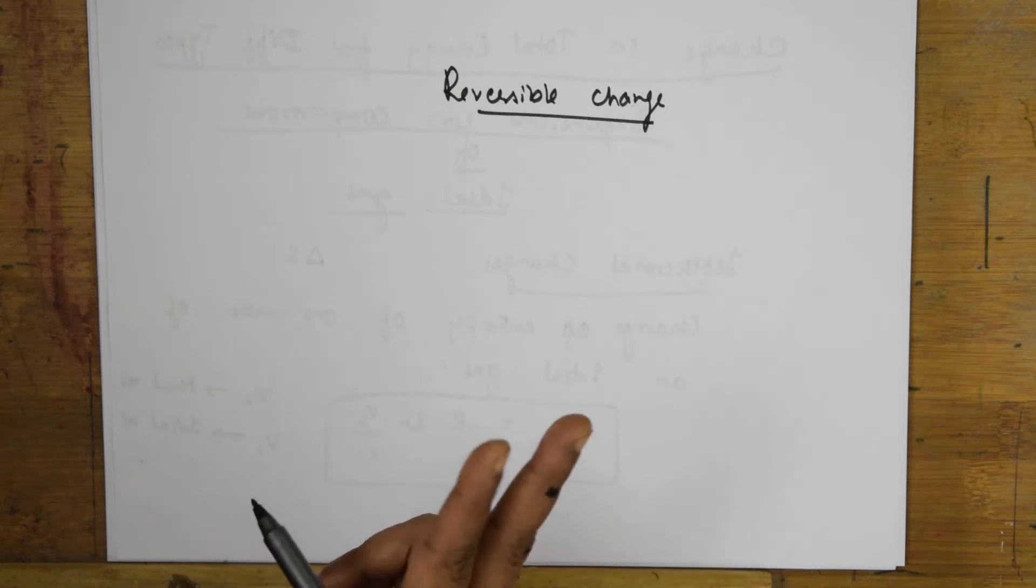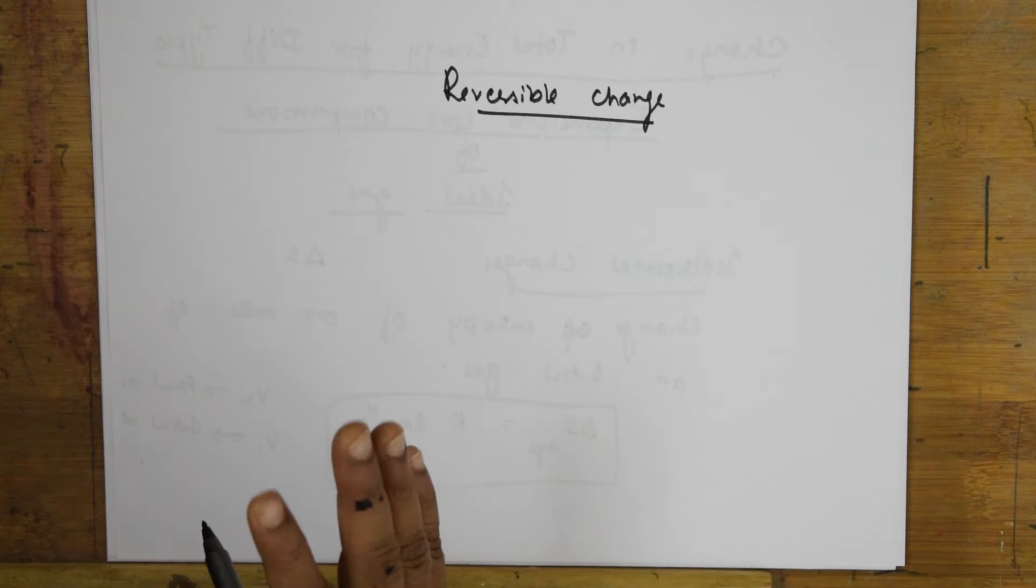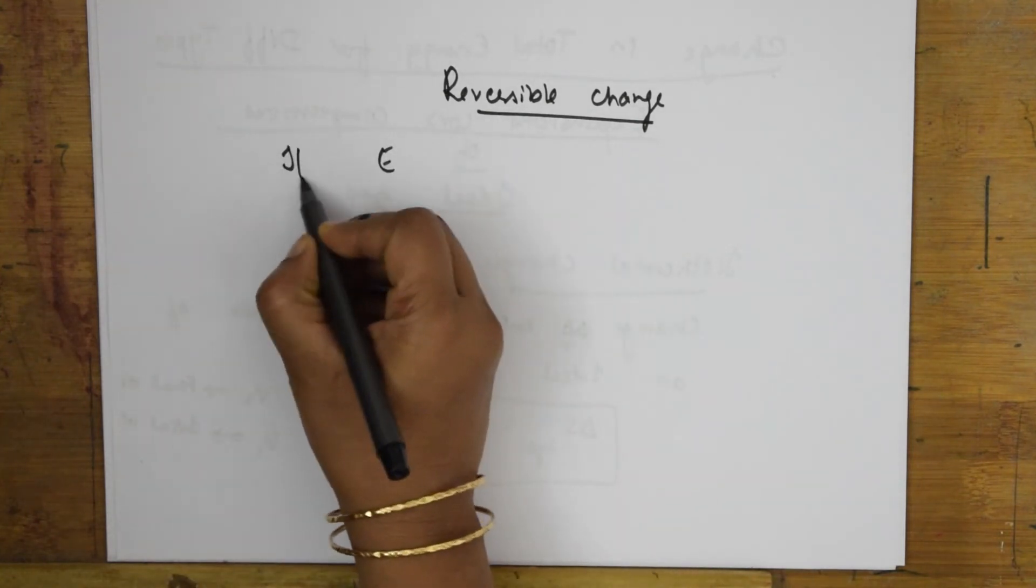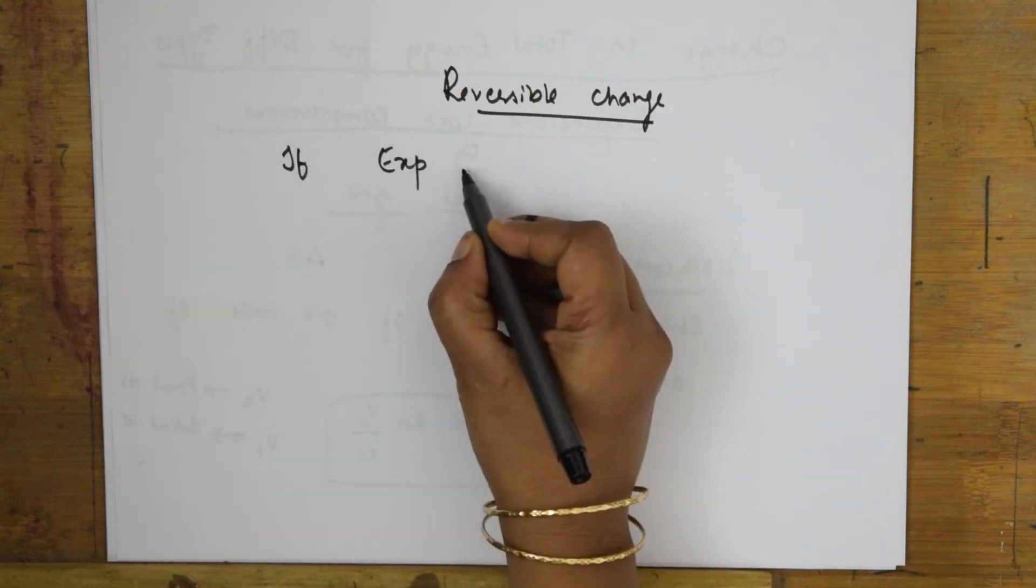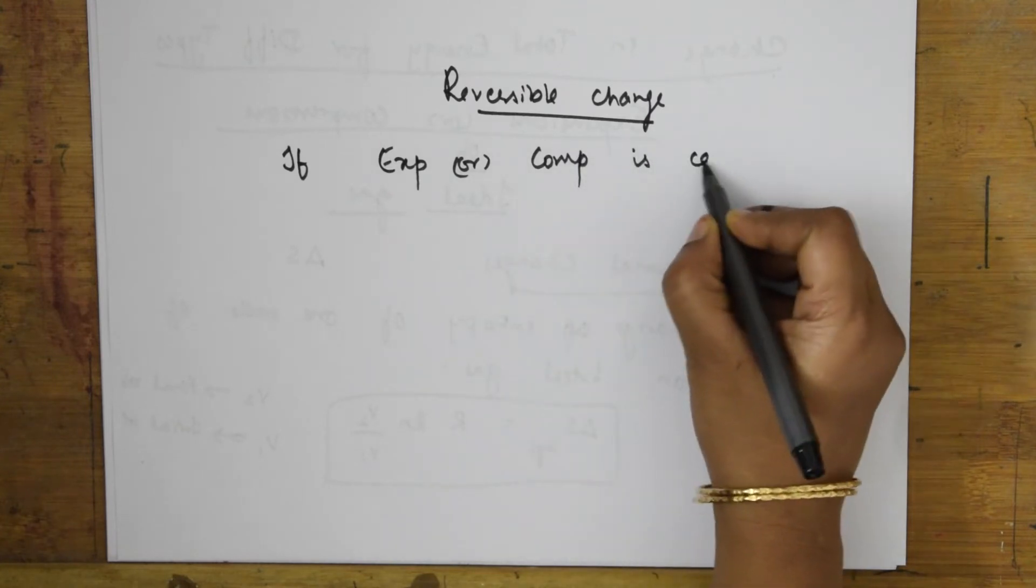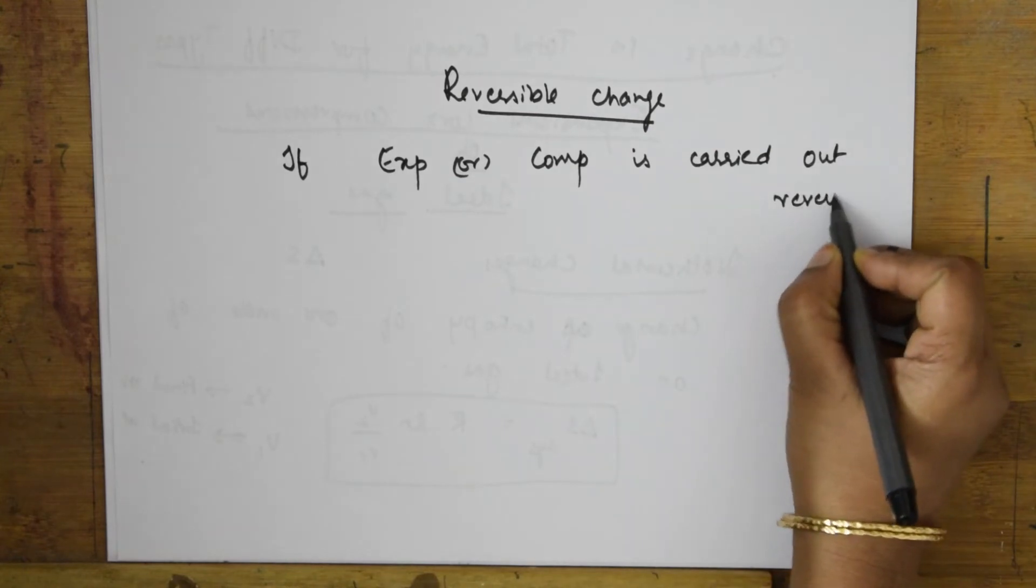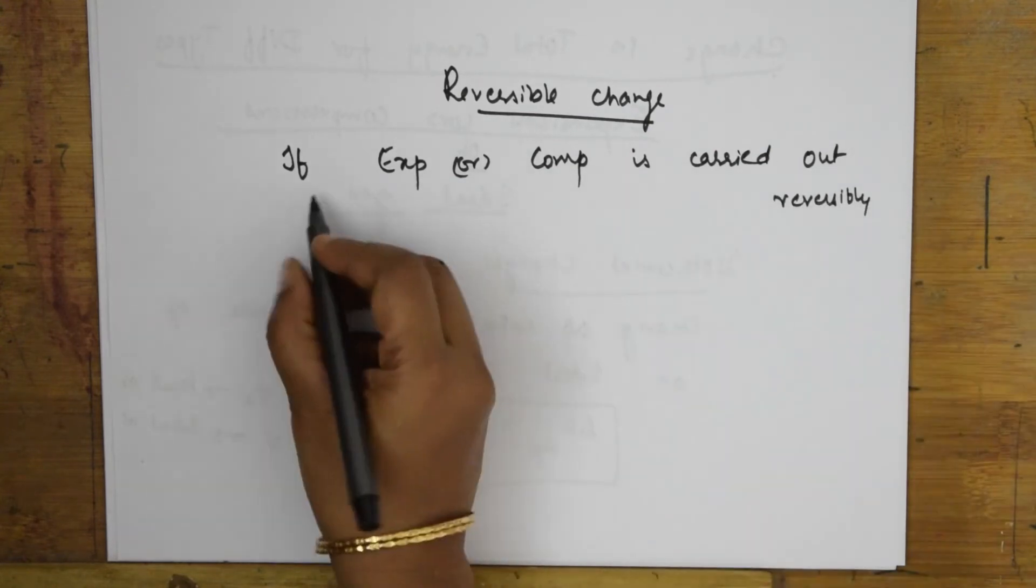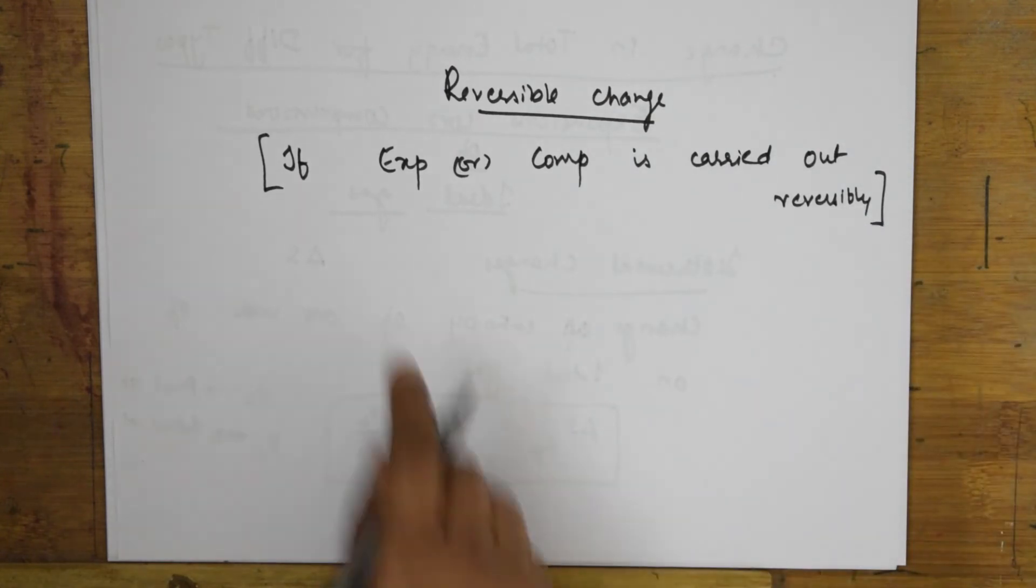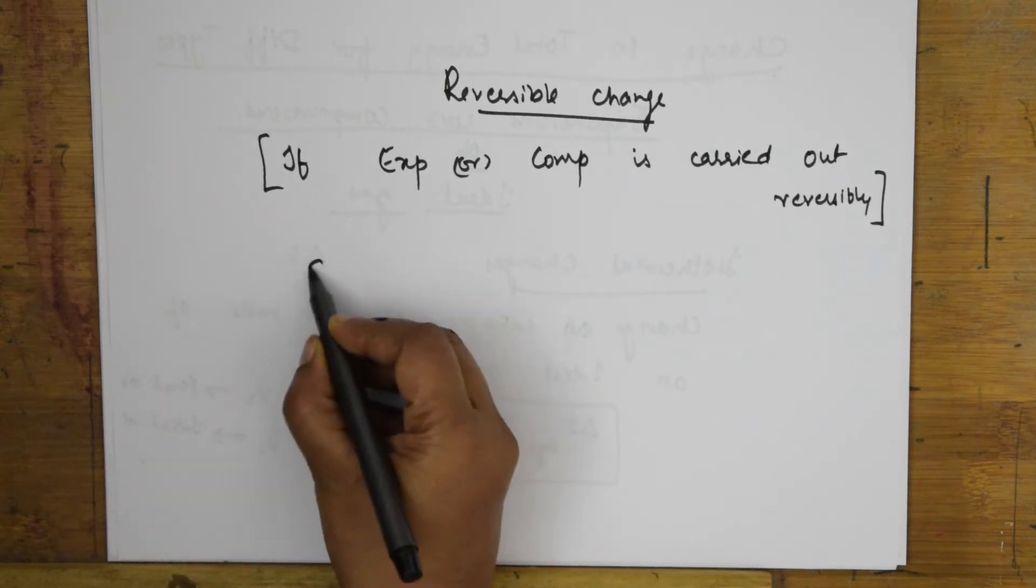Let's see how it goes about. I'm taking what concepts? Expansion as well as compression. Now I'm going to consider if the expansion or compression is carried out reversibly. If expansion or compression is carried out reversibly, remember this.